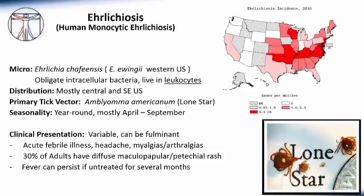Seasonality for ehrlichiosis is primarily spring and later summer months, though it can be found year-round. The clinical presentation is variable and can be fulminant, but is typically not as severe as Rocky Mountain Spotted Fever and has a very low untreated mortality rate. It presents as an acute febrile illness with headaches, myalgias, and arthralgias. About a third of adults will have a diffuse maculopapular or petechial rash, which can cause confusion with Rocky Mountain Spotted Fever. If untreated, ehrlichiosis can persist for several weeks or even months.